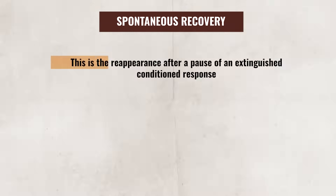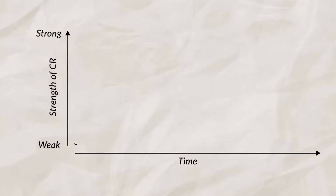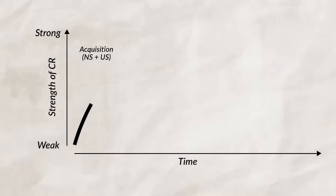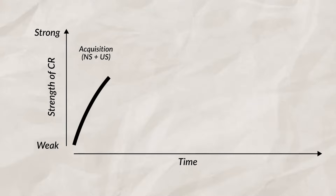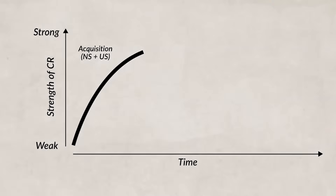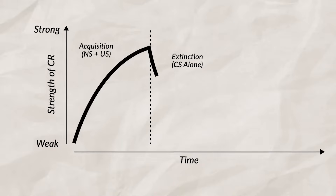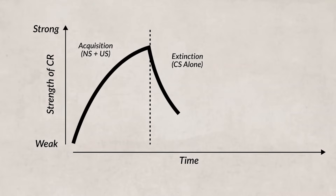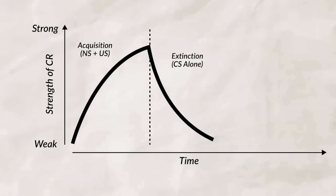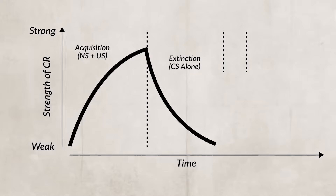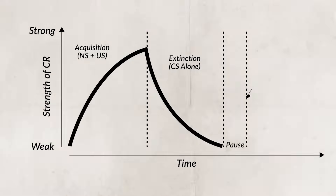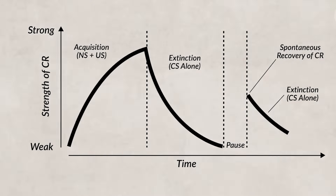Interestingly enough, Pavlov also discovered that if time passed without the dog hearing the bell — say an hour or so — the dog would still salivate to the bell again. This is known as spontaneous recovery, which is the reappearance after a pause of an extinguished conditioned response. We can see this process graphically: during acquisition, the neutral stimulus is paired with the unconditioned stimulus and the strength of the conditioned response intensifies. If we just have the conditioned stimulus by itself without the unconditioned stimulus, extinction starts to occur and the strength of the CR decreases. However, if we pause for a period of time, we can see spontaneous recovery of the conditioned response occur, but if we have the CS alone again, extinction starts again.